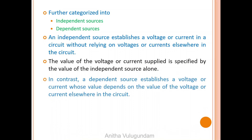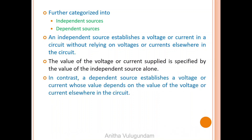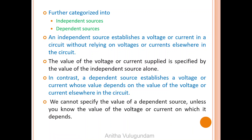Whereas a dependent source establishes a voltage or current whose value depends only on the value of voltage or current elsewhere in the circuit. We cannot specify the value of a dependent source unless you know the value of voltage or current on which it depends.